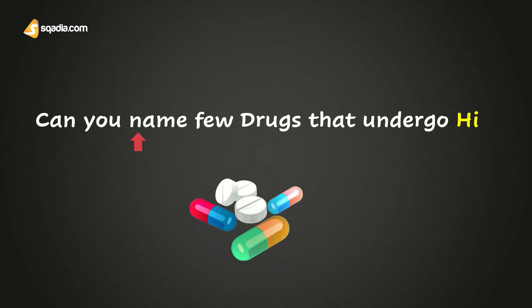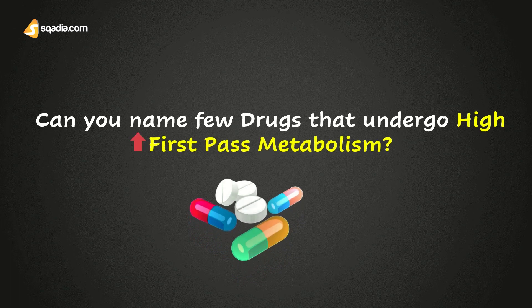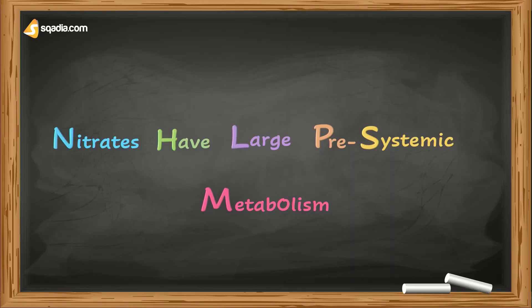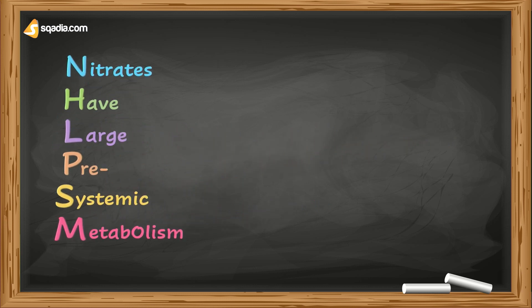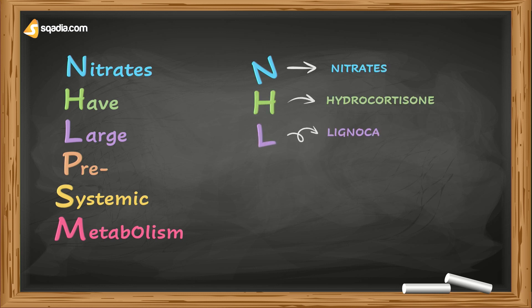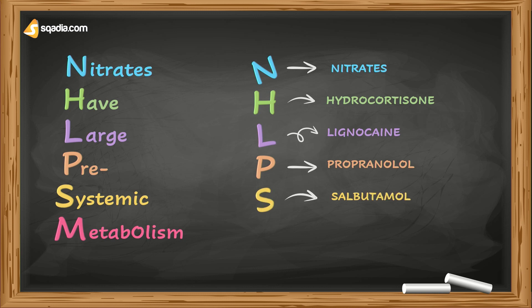Now, can you name a few drugs that undergo high first-pass metabolism? Don't worry, you don't have to learn them by rote, because there's an easy mnemonic to help you learn it by heart: 'Nitrates have large pre-systemic metabolism.' Where N stands for nitrates, H for hydrocortisone, L for lignocaine, B refers to propranolol, S for salbutamol, and M indicates morphine.